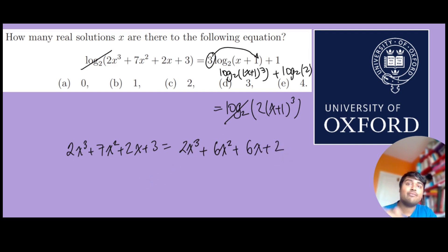Now we can bring everything onto one side and see if that simplifies nicely. The 2x³ terms cancel out, that's lovely. For the x² terms, 7x² - 6x² is just x². 2x - 6x is -4x. 3 - 2 is +1. So we have x² - 4x + 1 = 0.